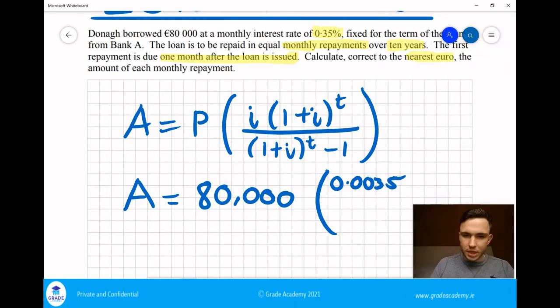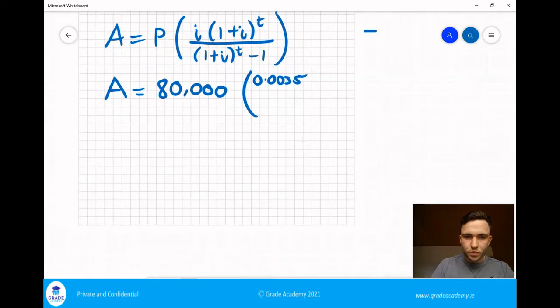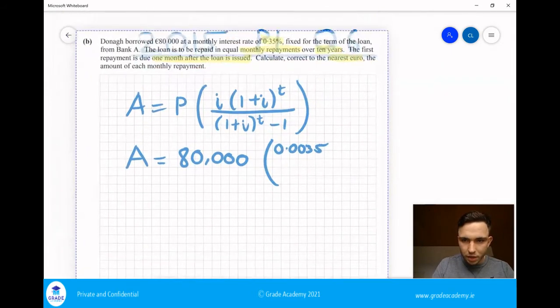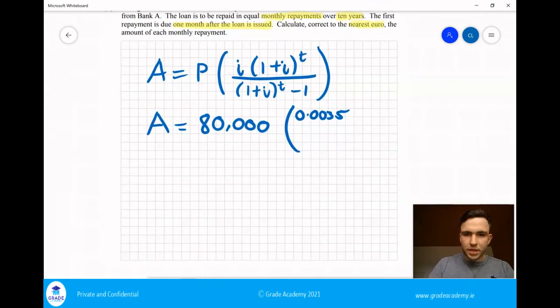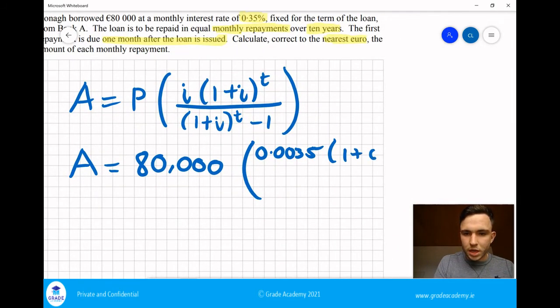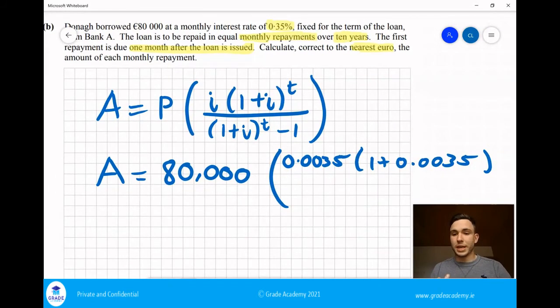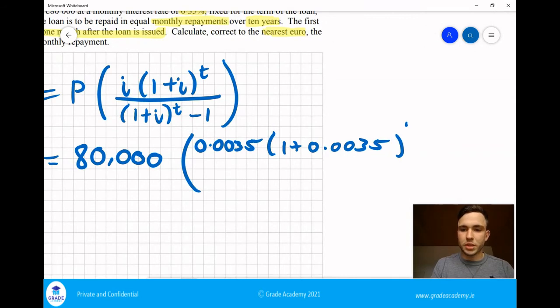Okay, plus one plus... multiply by one plus i, which is 0.0035 to the power of T. So what is T going to be? Well, they're paying it back for 10 years monthly. It's really important that if our i is in months, we put our T in months as well. So that's going to be 120, which is 12 times 10.